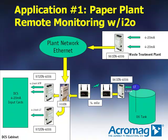Application number one shows a paper plant application running I2O through the plant network and wirelessly to a remote oil tank location. Acromag's 961EN is receiving and transmitting two 4 to 20 milliamp signals coming from the waste treatment plant. The module is connected through a switch into the plant network going back to the DCS. The DCS control cabinet includes a 5 port ethernet switch and an analog 972EN analog output module that is feeding the analog input cards on the DCS.